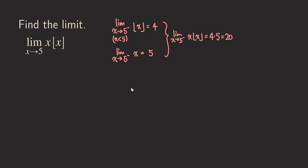The next step is to consider the right-side limit. So we take the limit as x approaches 5 from the right of the floor function of x. Here x is greater than 5, so the greatest integer less than something just above 5 is 5. We also find the limit of x as x approaches 5 from the right, which trivially gives us 5.